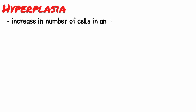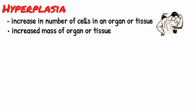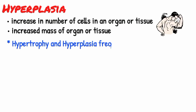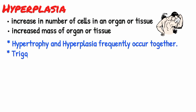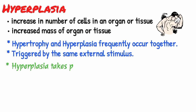Hyperplasia is an increase in number of cells in an organ or tissue, usually resulting in an increased mass of organ or tissue. Although hypertrophy and hyperplasia are distinct processes, they frequently occur together, and they may be triggered by the same external stimulus. Hyperplasia takes place if the cell is capable of dividing.